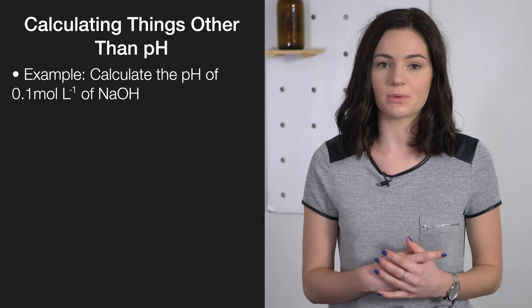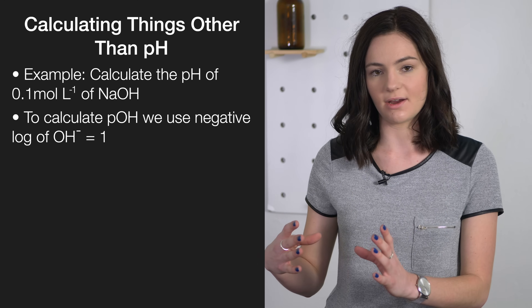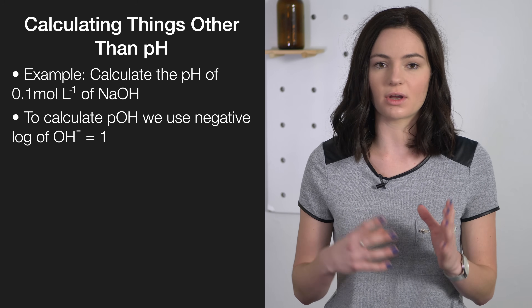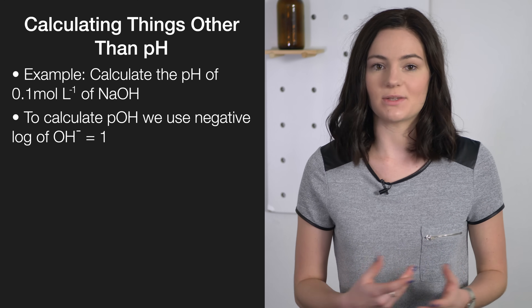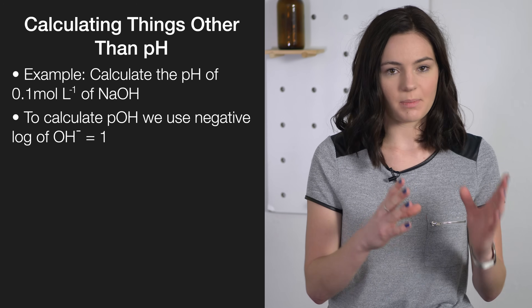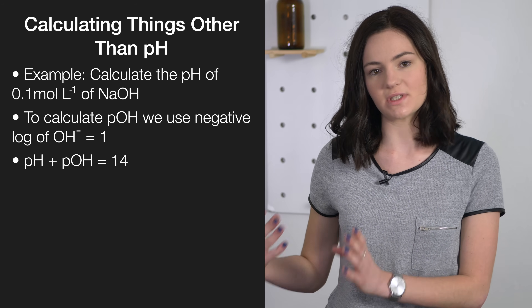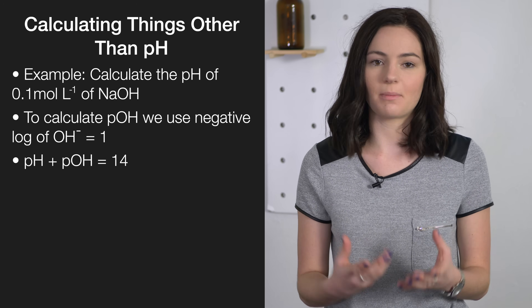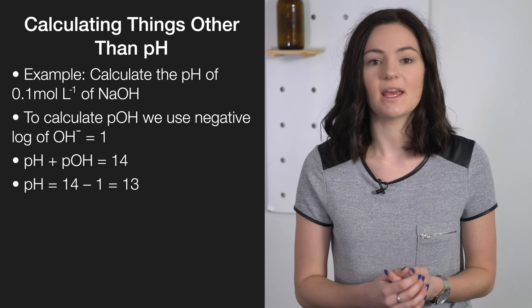To calculate pOH, we use negative log of the hydroxide ions. So in this case, it would be negative log of 0.1, which equals 1. We know that pOH plus pH equals 14, so 1 plus pH equals 14, therefore pH equals 13.